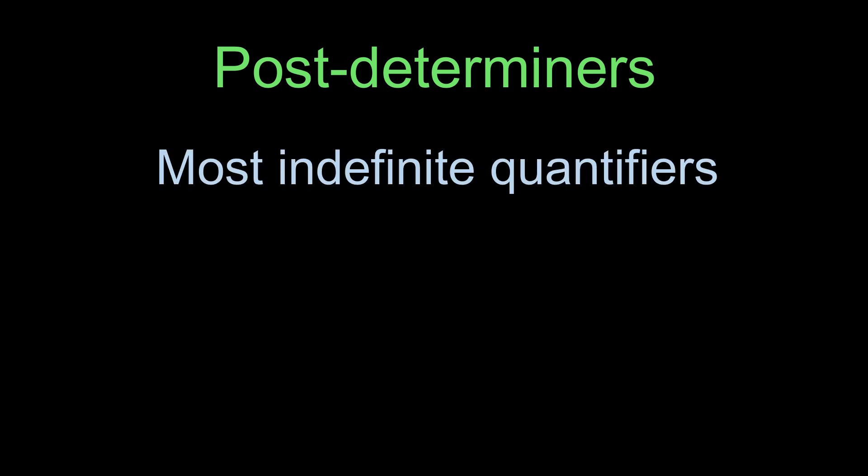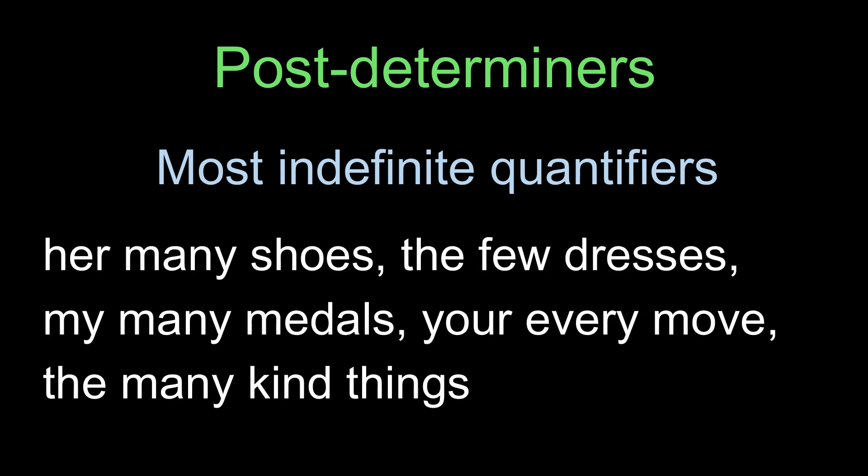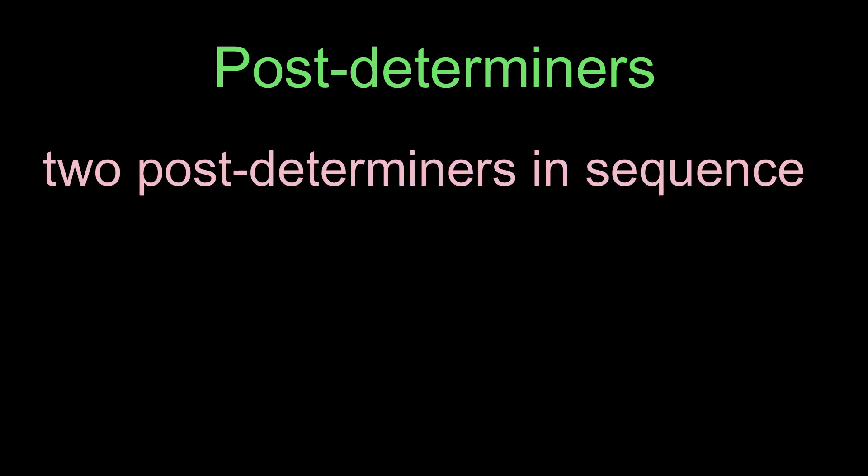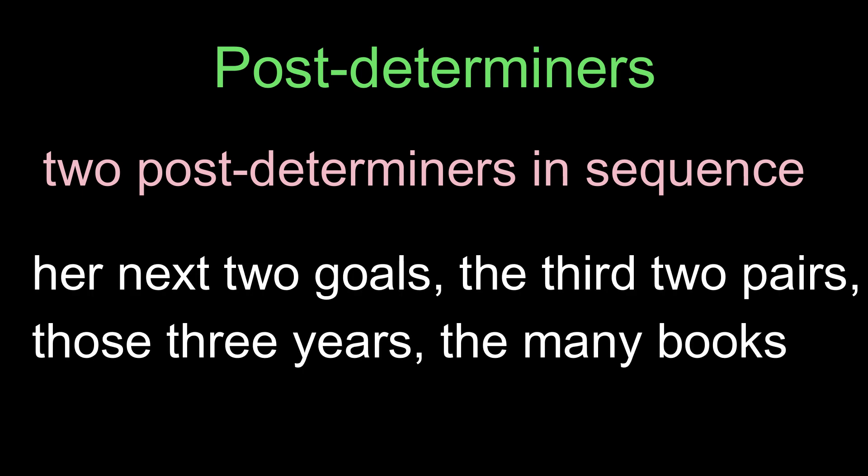Most indefinite quantifiers can also be post-determiners. For example: 'Her many shoes,' 'The few dresses,' 'My many medals,' 'Your every move,' 'The many kind things.' There can be more than one post-determiner in a noun phrase. We can have two post-determiners in sequence: 'Her next two goals,' 'The third two pairs,' 'Those three years,' 'The many books.'